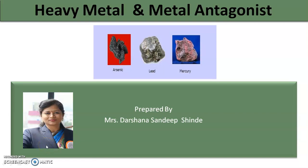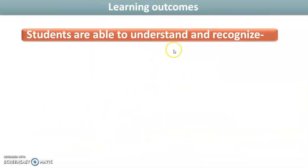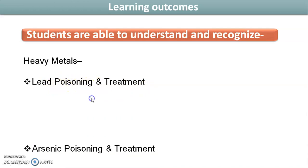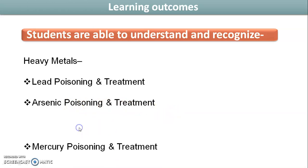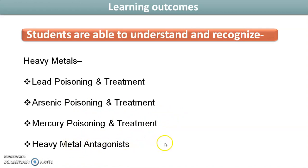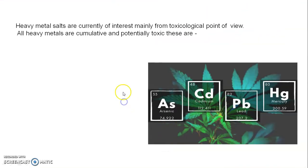Welcome, dear students. Today we deal with heavy metals and metal antagonists. The learning outcomes of today's session are: students, after watching this video, will be able to understand and recognize what is meant by heavy metals — specifically lead and its poisoning and treatment, arsenic its poisoning and treatment, mercury its poisoning and treatment, and heavy metal antagonists.